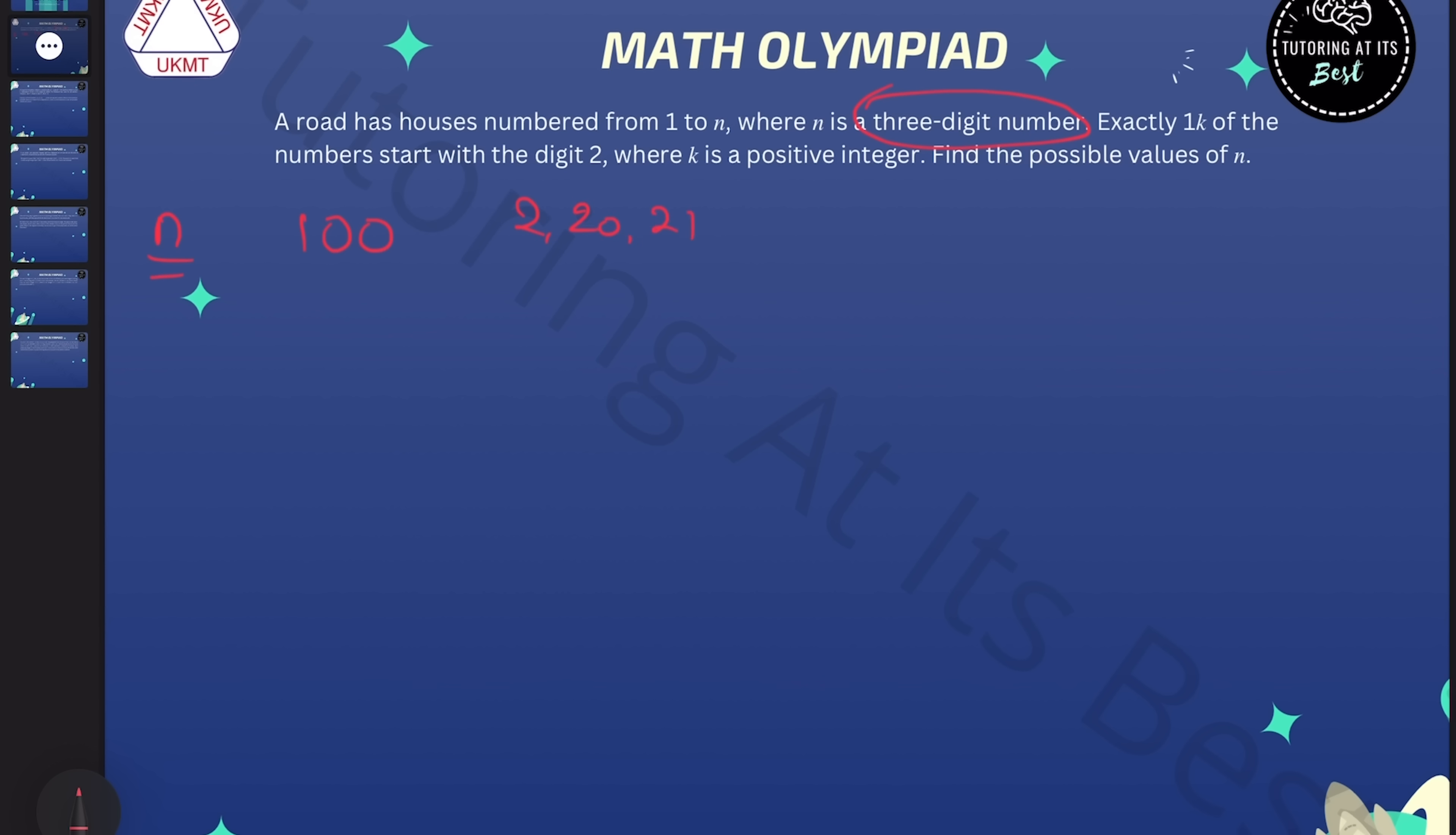then we can go with 2, 20, 21, all the way up to 29. So 11 in total, which means it will be 11 out of 100. So that is not going to give us a fraction of 1 over k. So we cannot use 100.